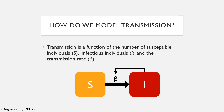So how do we actually model the transmission process in this context? Transmission is a function of the number of susceptible individuals — that's our susceptible compartment here in orange — the number of infectious individuals, shown here in red, and this transmission rate or transmission function, beta.